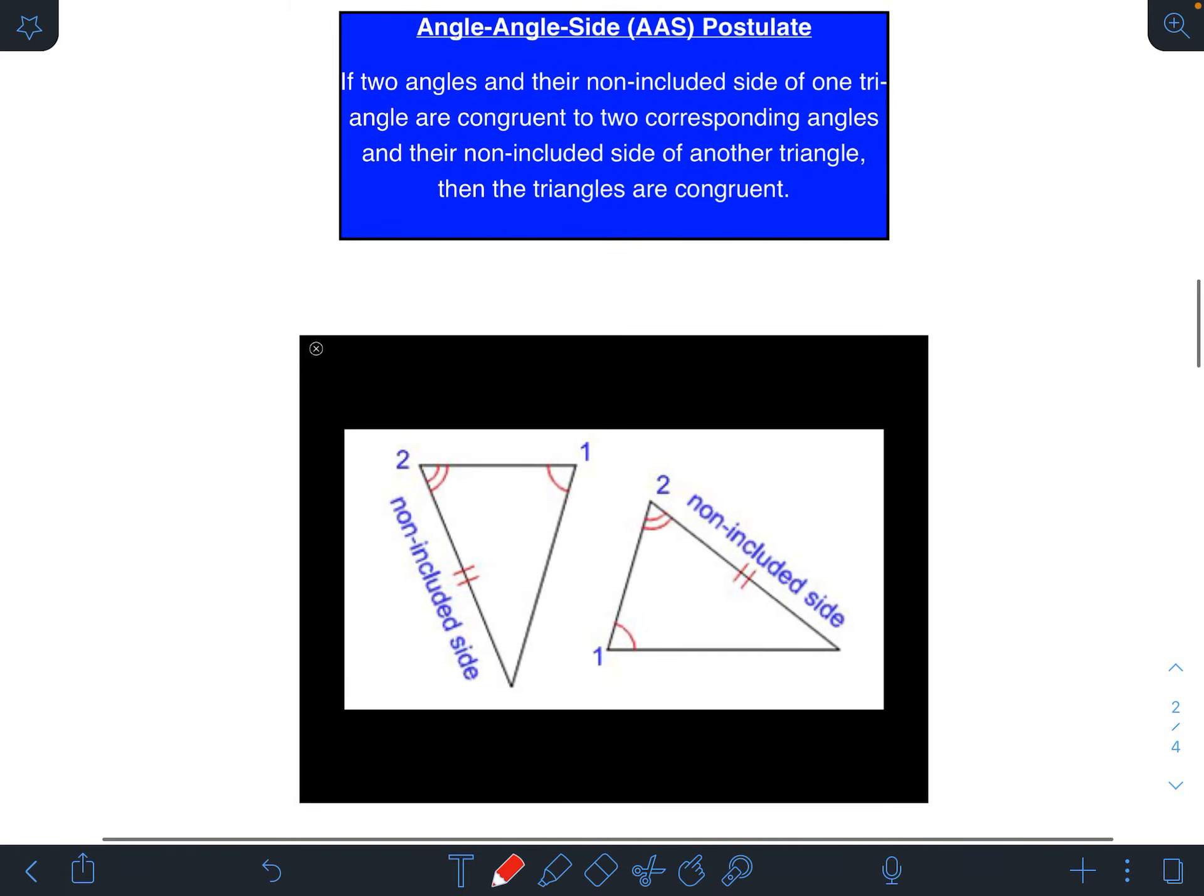So what does that look like? Let's look down here. We have our two sets of corresponding congruent angles. There's one of them. There's the other one.